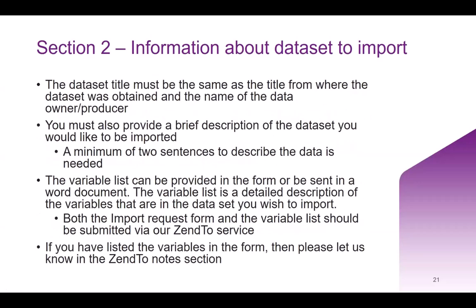As well as classifying your data type, in section two you also need to give information about the data set. This includes the title, where the data has come from, and who the data owner is. You also need to describe what the data set is and its purpose. You need to provide a variable list — each variable in the data set — which you can submit as a separate Word document or file along with the import request form via the Zen2 service. If it's a small data set with few variables, you can list them directly on the form.